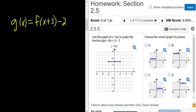So whenever we add a number to the x value, it's backwards. So in this case, it's left 3. And whenever we subtract the number from the entire function, it's down 2.